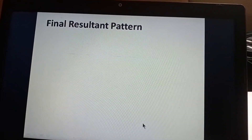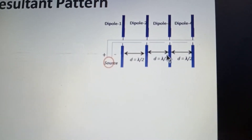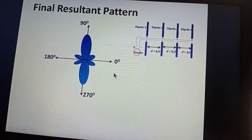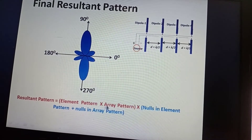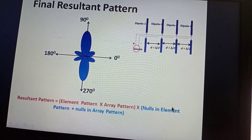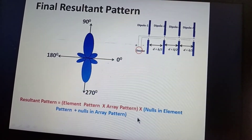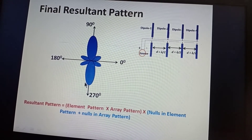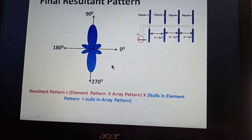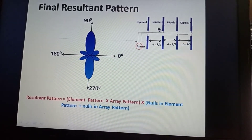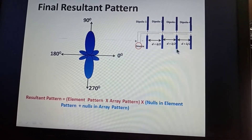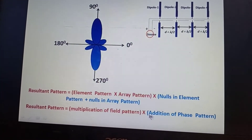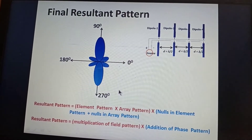The final resultant pattern for four elements separated by lambda/2 is obtained. The equation is: resultant pattern = element pattern × array pattern, and the total nulls = nulls of element pattern + nulls of array pattern. We get 4 + 2 = 6 nulls total (two nulls already merged), with maxima at 90° and 270°. This resultant pattern can also be expressed as the multiplication of field pattern and addition of phase pattern.